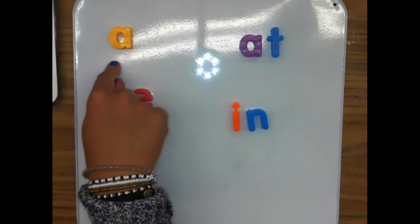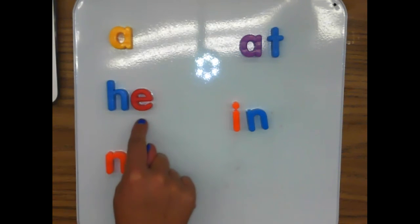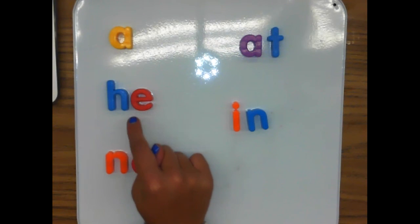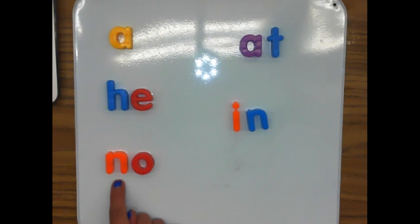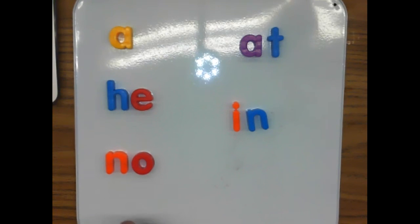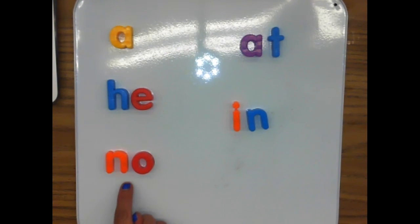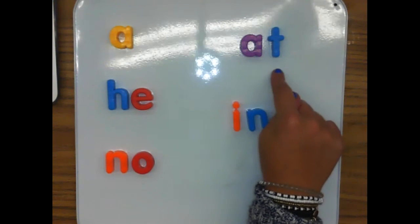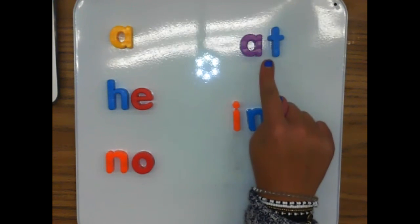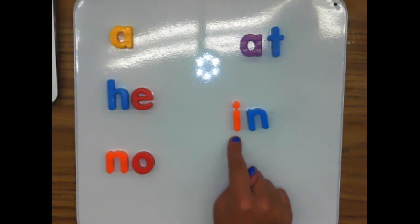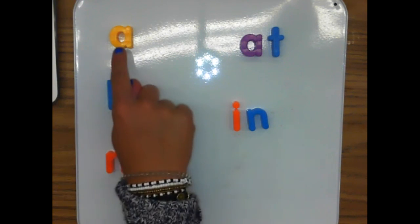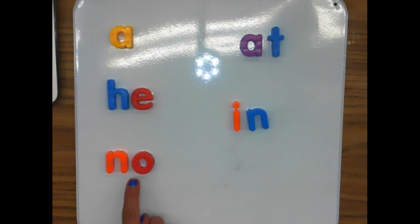One more time. A spells a. H-E spells he, he, he. N-O spells no, no, no. A-T spells at, at, at. I-N spells in, in, in. A, he, no, at, in.